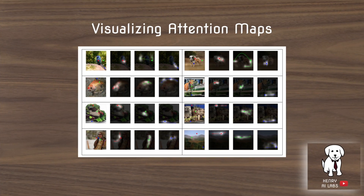One interesting thing in the paper is they visualize the attention maps. Because adding the attention at the 32x32 layer would make visualization at 128x128 hardly meaningful, what they do is place the attention map at the very last layer right before the output so that the visualization makes some kind of intuitive sense.